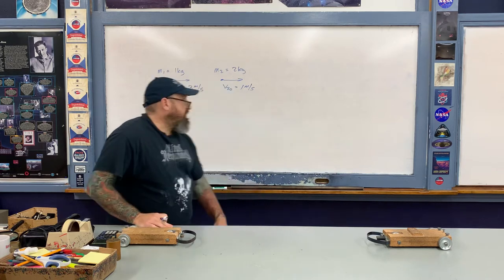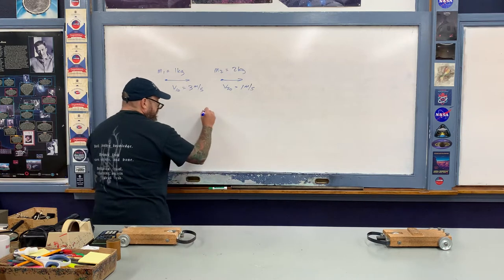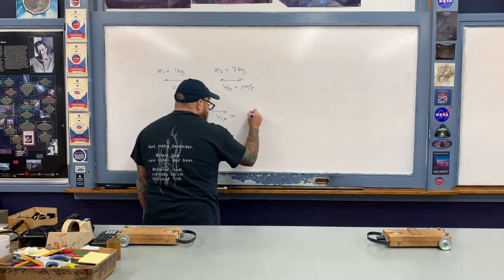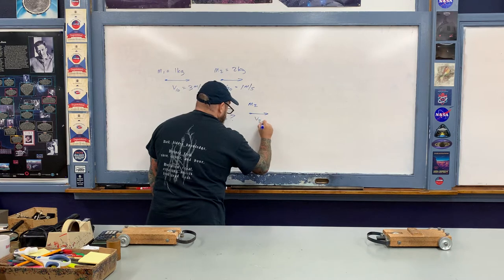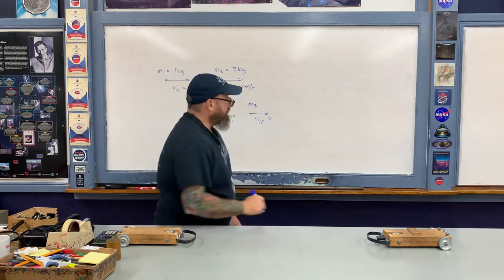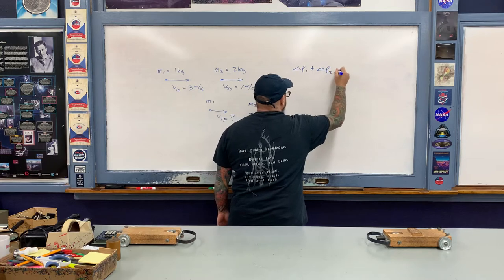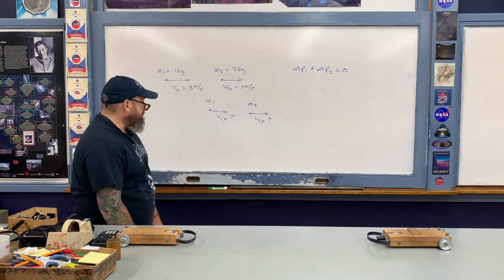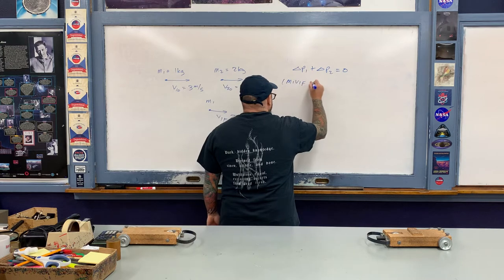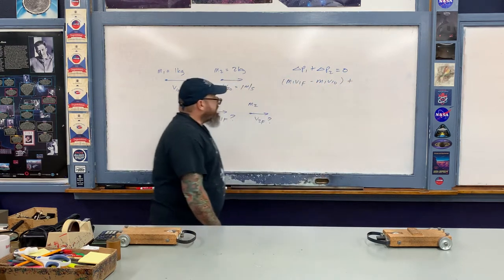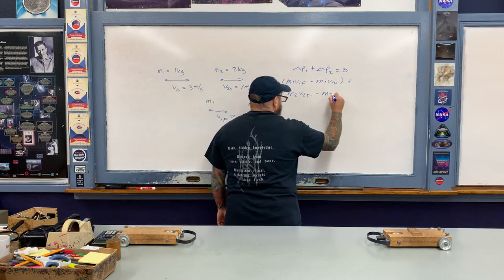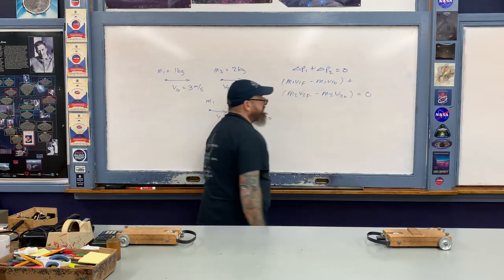When they bounce off each other, we don't know whether m1 will rebound or keep going in its original direction of motion. So we label v1-final and v2-final as unknowns. Now we set up the first of our two equations: conservation of momentum. The change in momentum of object one plus the change in momentum of object two equals zero. Filling in terms: m1·v1-final minus m1·v1-naught, plus m2·v2-final minus m2·v2-naught equals zero.